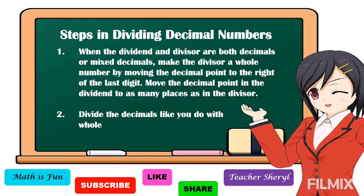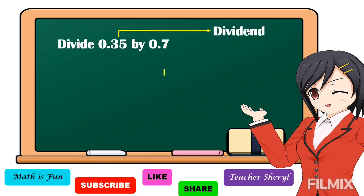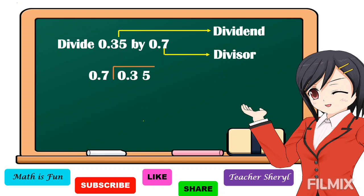Number two: divide the decimals like you do with whole numbers. Let's study some examples. Divide 35 hundredths by 7 tenths. 35 hundredths is the dividend and 7 tenths is the divisor. To get the quotient, or the answer in division, we're going to write first in this format — we put 35 hundredths inside and 7 tenths outside.